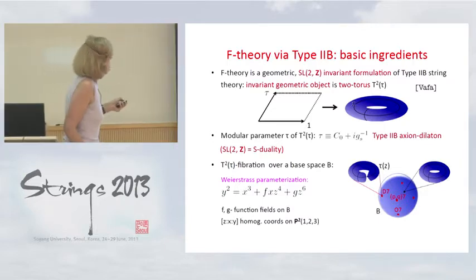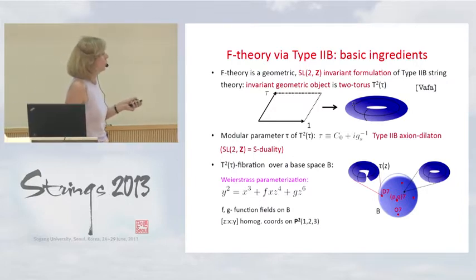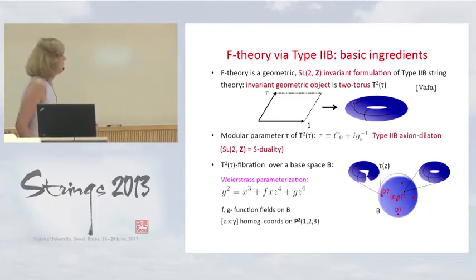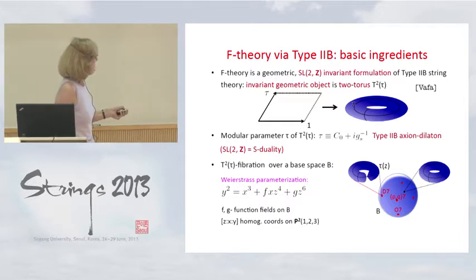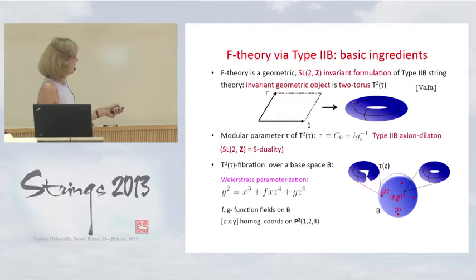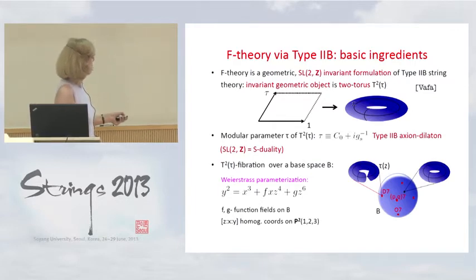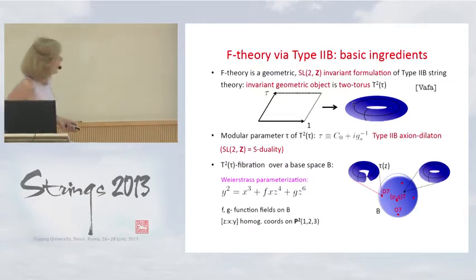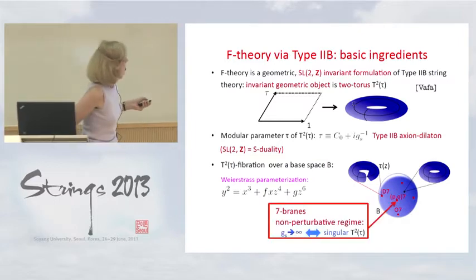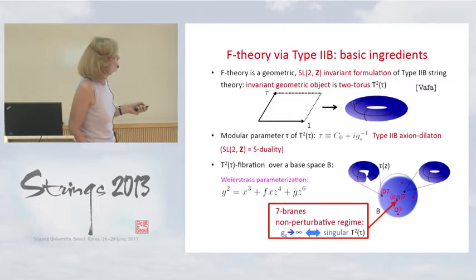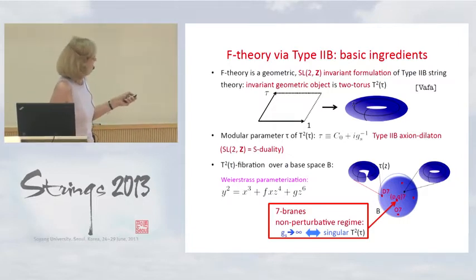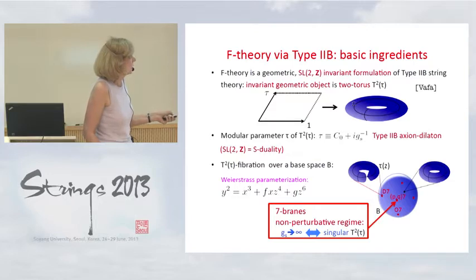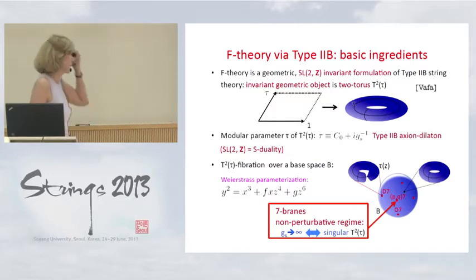In compactification, this torus is fibred over the base, which we parameterize with Weierstrass parametrization. The torus parametrization is in terms of a functional relation of the torus coordinates, and the f and g functions are functions of the base coordinates. When the fibration of the torus degenerates, the string coupling of type IIB theory becomes very large, typically associated with the appearance of seven-branes in the base.